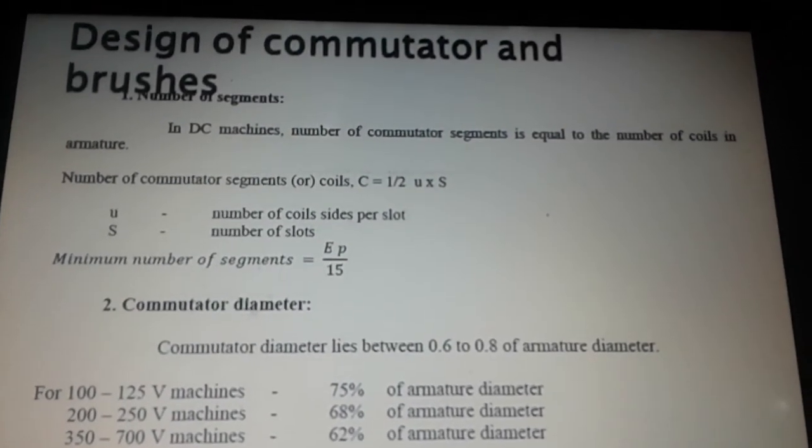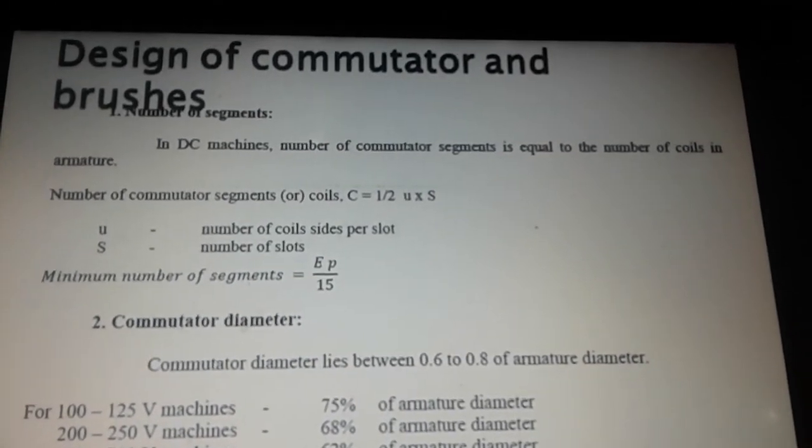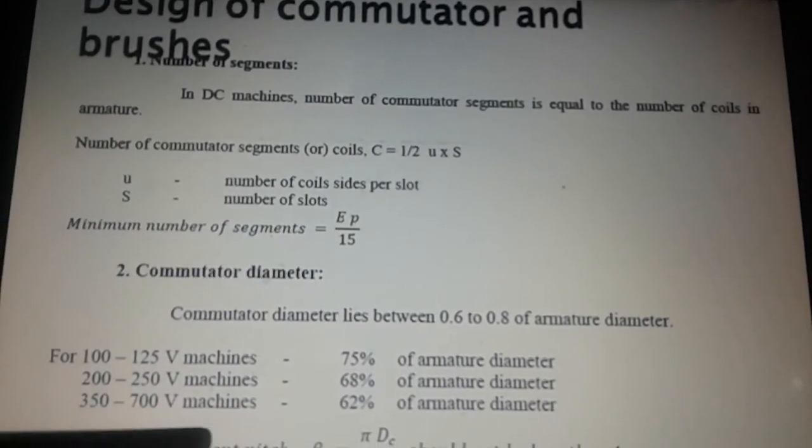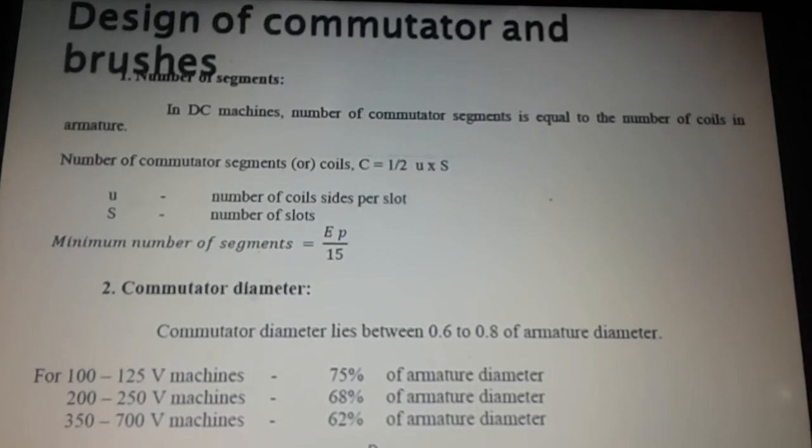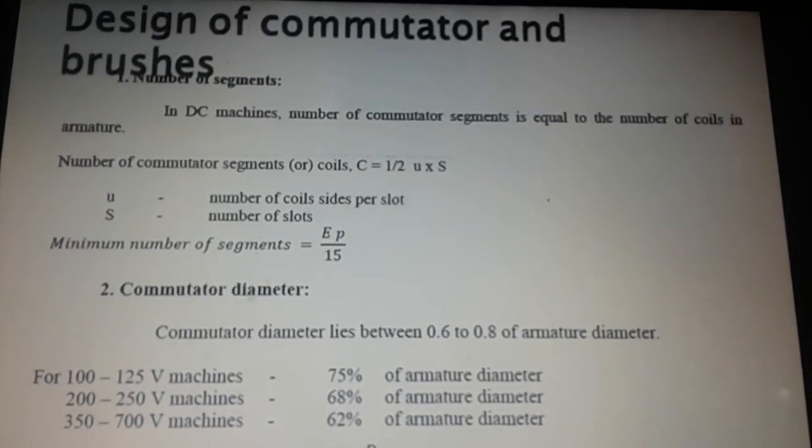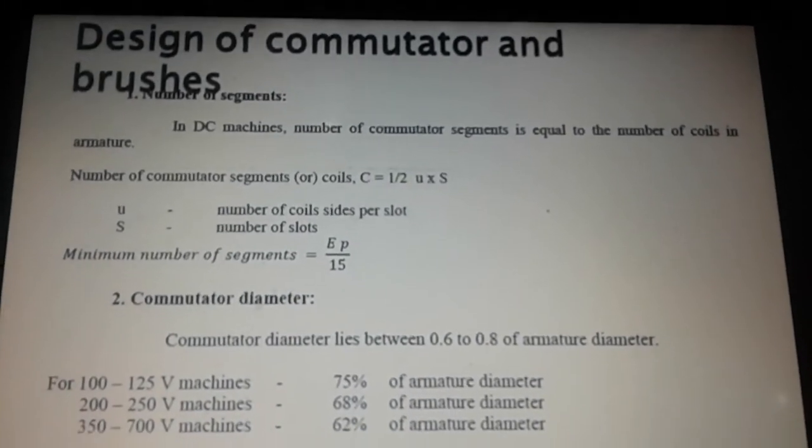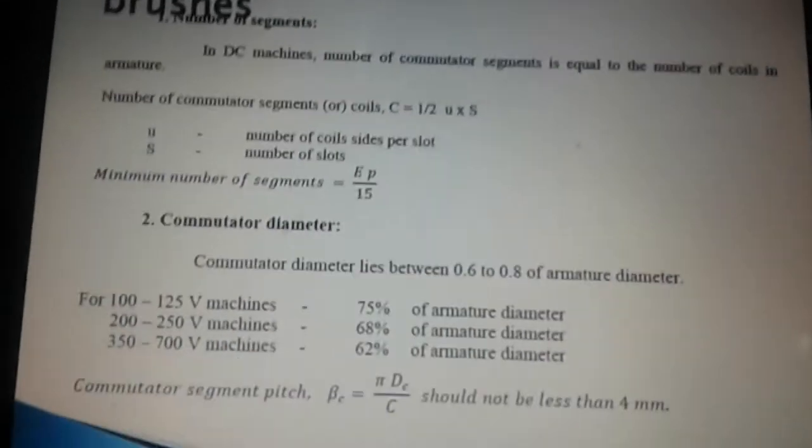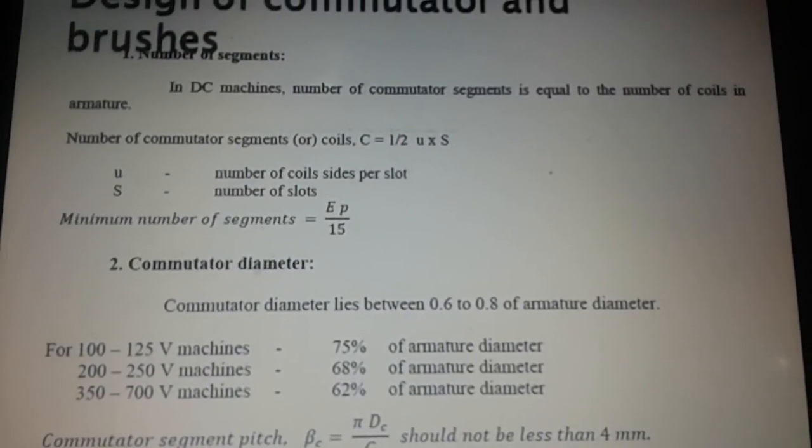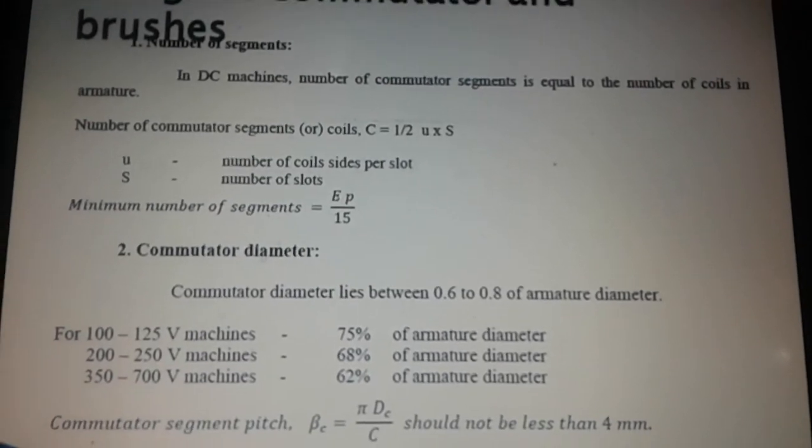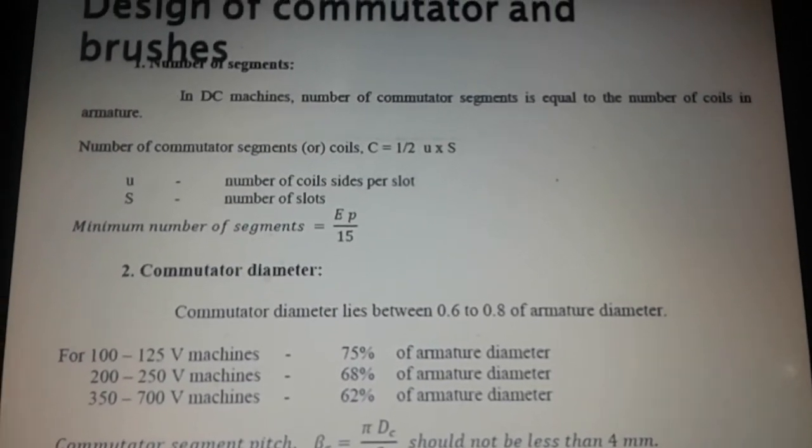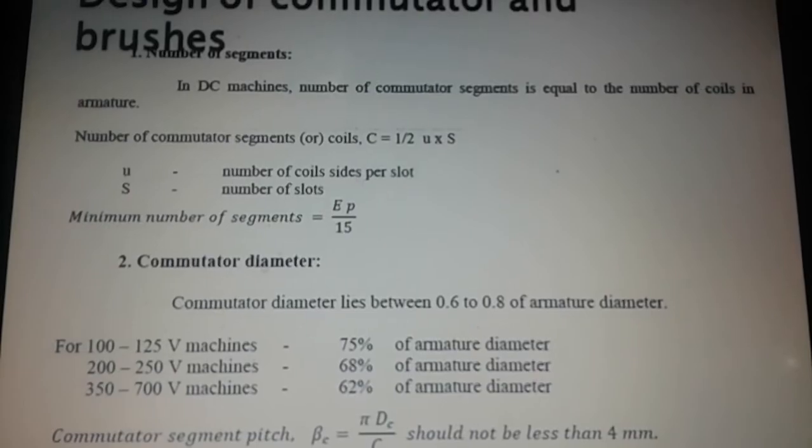For 200 to 250 volt machines, it is 68% of armature diameter. And for 350 to 700 voltage machines, it is 62% of armature diameter. The commutator segment pitch is πDC divided by C, and it should not be less than 4 mm.